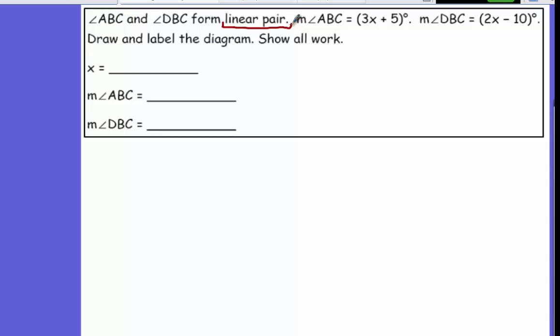Linear is a straight line. A straight line is 180 degrees. So linear pairs have to make 180 degrees.